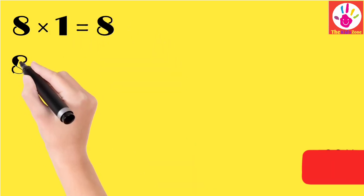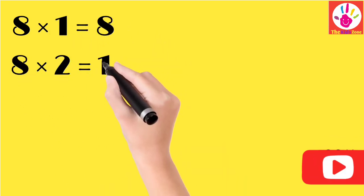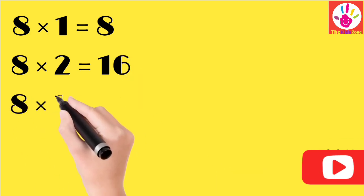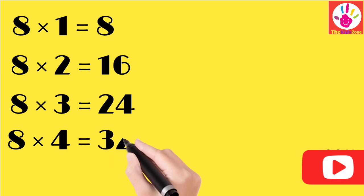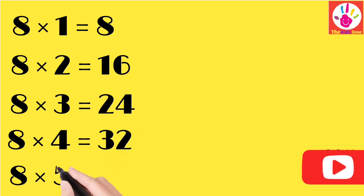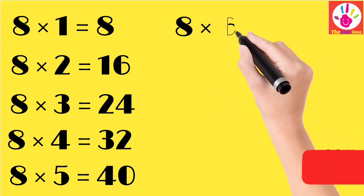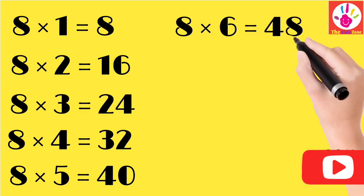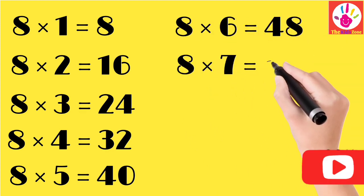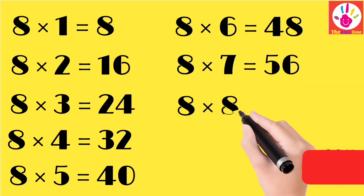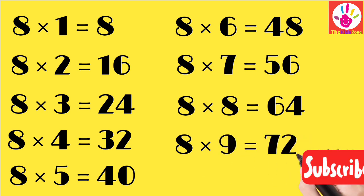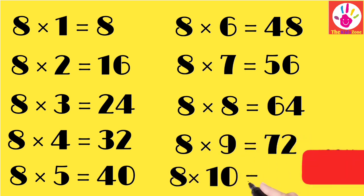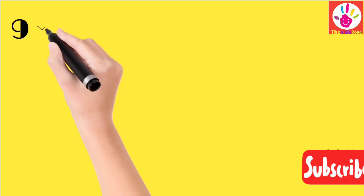Table 8: 8 ones are 8, 8 twos are 16, 8 threes are 24, 8 fours are 32, 8 fives are 40, 8 sixes are 48, 8 sevens are 56, 8 eights are 64, 8 nines are 72, and 8 tens are 80.